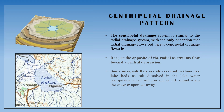The Centripetal Drainage Pattern is the opposite of Radial. In the Radial pattern, streams flow outward from the highest point, while in Centripetal, the streams flow inward toward the center — like into a lake or a depression. The whole area drains toward the same central low point, and all rivers join there. This is the Centripetal Drainage Pattern.